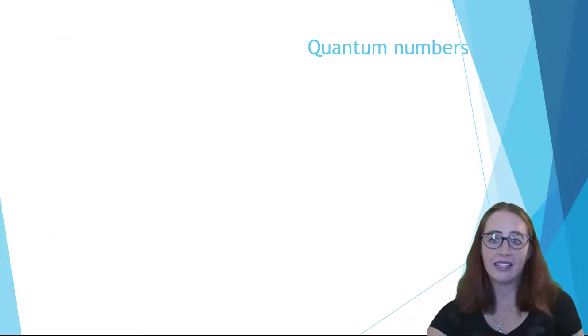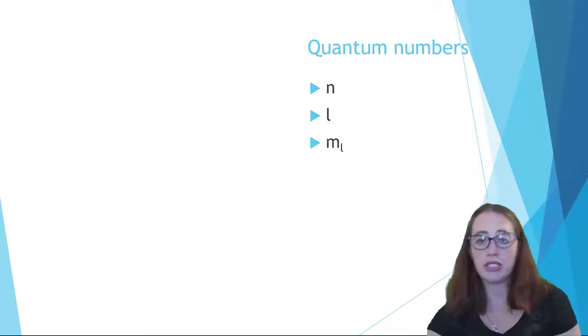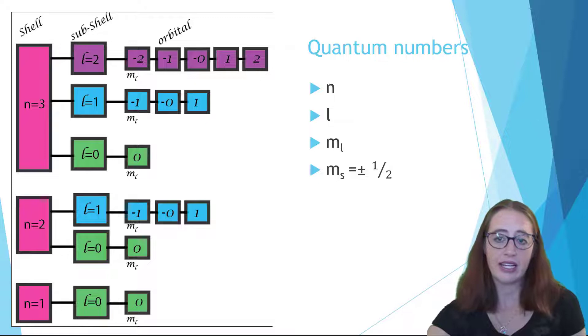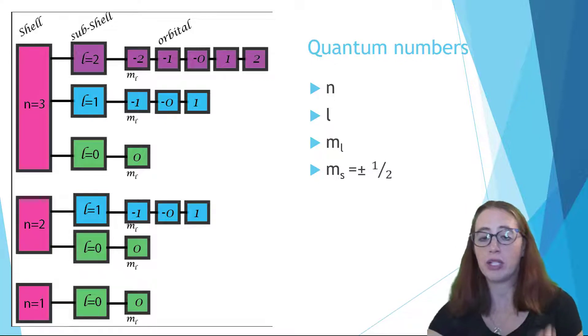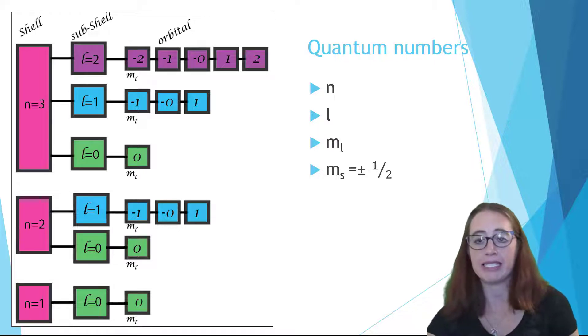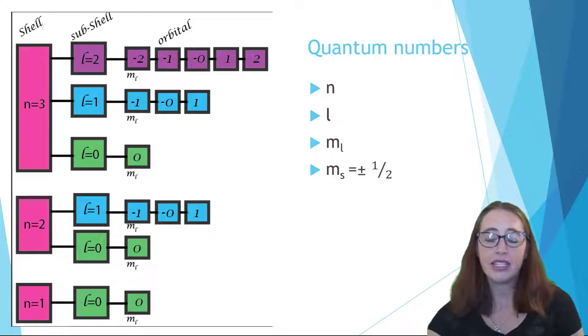Our descriptive numbers are called n, l, m sub l, and m sub s. We've already talked about n, and in a way we've already talked about l as well. n is the energy level. This is the same n that we discussed with the Bohr model of the atom. l is what we've been calling subshells. This says whether it's an s, d, p, or f orbital. The next one is m sub l. This is going to be used to differentiate between the p orbitals or between the different d orbitals. m sub s differentiates between the two electrons. This is a better way of discussing spin up or spin down.